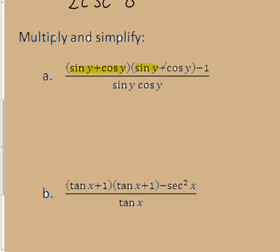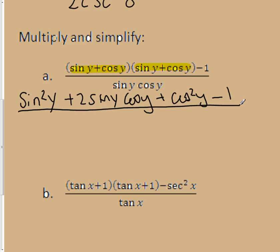So, this times this, because they are the same thing, will produce a perfect square trinomial. Or I can distribute it out, and I'm going to get the sine squared of y plus 2, the sine of y, cosine y, plus cosine squared of y, minus 1, all over the sine of y, cosine of y.